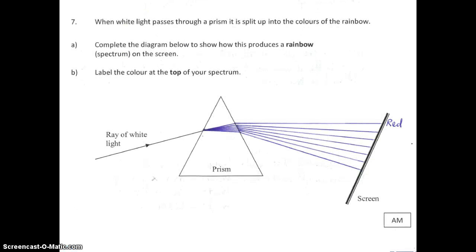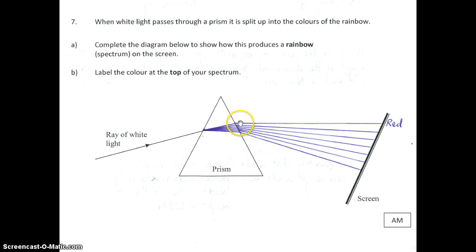Question 7: when white light passes through a prism, it is split up into the colours of the rainbow. Complete the diagram to show how this produces a rainbow on the screen, and label the colour at the top of your spectrum. The light starts being split up inside the prism, giving seven rays for the seven different colours. It's refracted as it enters the denser medium and again as it comes out, ending up with seven rays all at different angles.